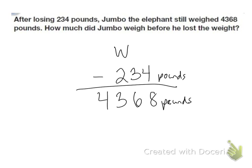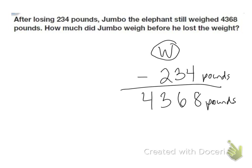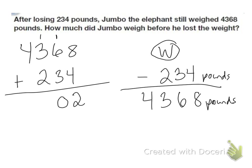So to find the missing answer, the first number is missing. So I know to find it, I need to add 4,368 plus 234. So 8 plus 4 is 12, carry my 1. 1 plus 6 is 7 plus 3 is 10, carry my 1. 1 plus 3 is 4 plus 2 is 6. And 4 plus nothing is 4.